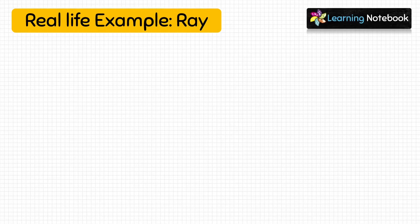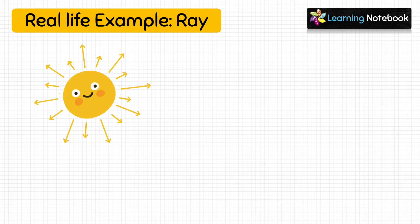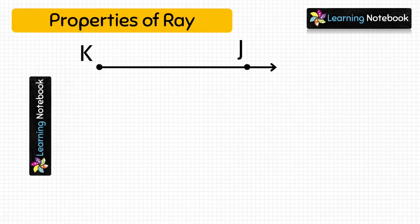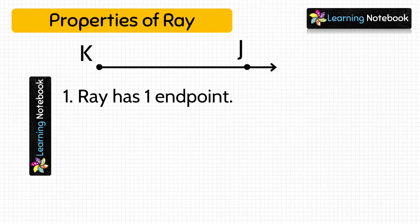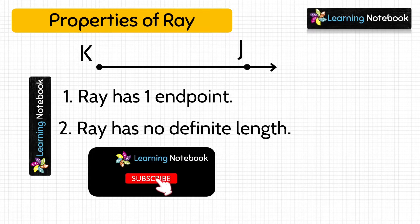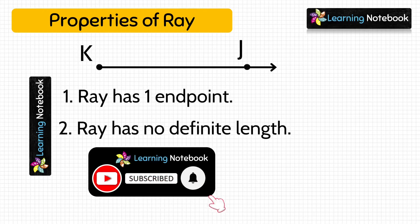Some real-life examples of ray are rays from the sun and rays from a flashlight — they have a starting point and go indefinitely in one direction. Properties of ray: a ray has one end point, and since it extends indefinitely in one direction, it has no definite length.